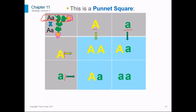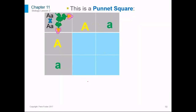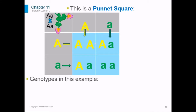You will see that some combinations appear more than once. For example, we have capital A and little a appearing twice. If they appear more than once, they have a higher percentage of the offspring that will have that genotype. In this example — a heterozygous plant crossed with a second heterozygous plant — one out of four of the offspring will get a homozygous dominant genotype.